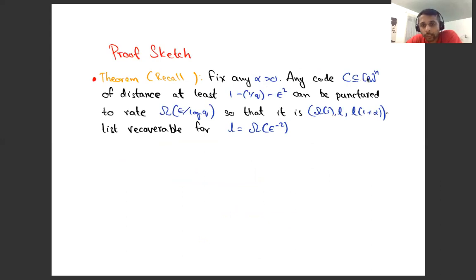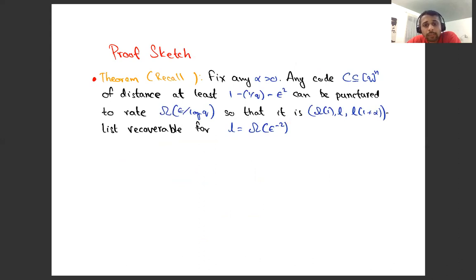Let me recall the main theorem for the proof sketch. Fix any α > 0. Any Curie code C of distance at least 1 − 1/Q − ε² can be punctured to rate roughly ε/log Q so that it can be list recovered from a constant fraction of errors and lists of size 1/ε².